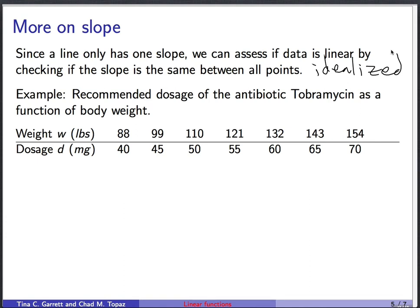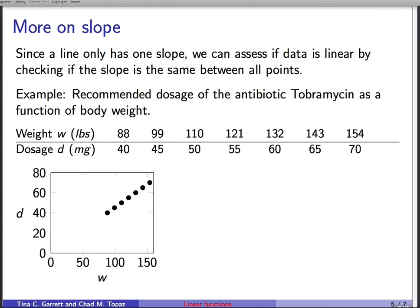So this example we're going to do, this is a very idealized example, just to make the concept clear. And the example is the recommended dosage of the antibiotic tobramycin as a function of body weight. So as a function of body weight, that means body weight, which we're calling W. That's the independent variable. And the dependent variable is going to be the recommended dosage, which we're calling D. And we're going to measure weight in pounds, dosage in milligrams. We see a bunch of data here.